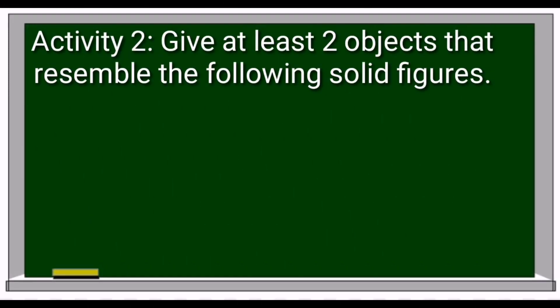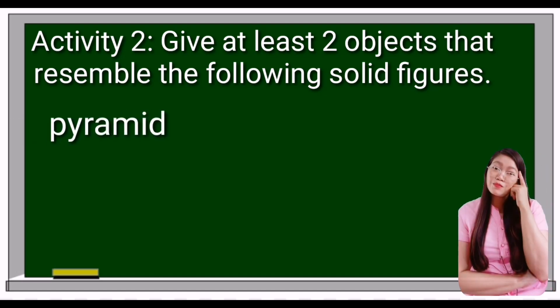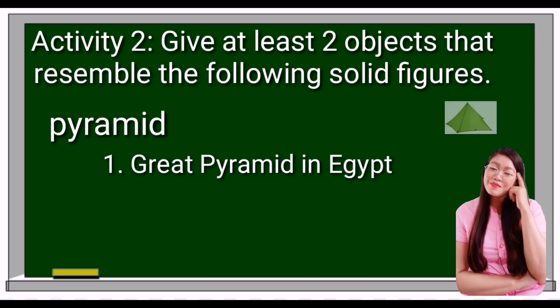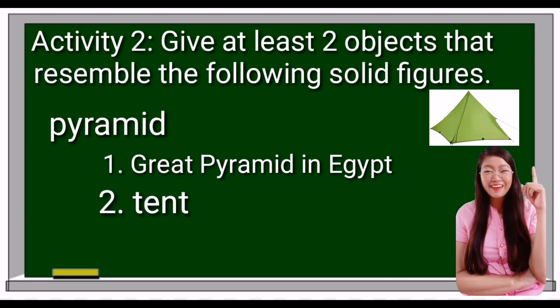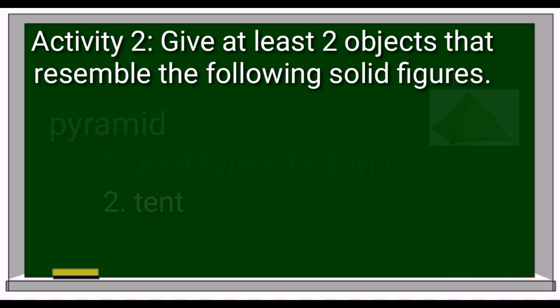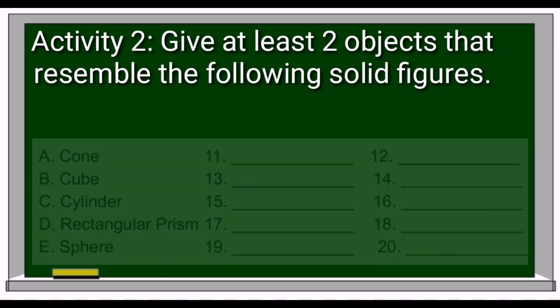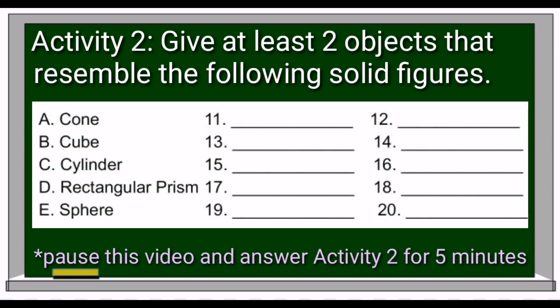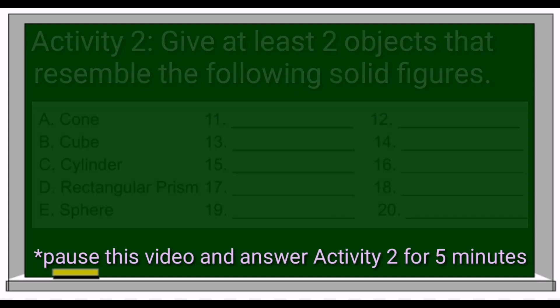Activity 2: Give at least two objects that resemble the following solid figures. For pyramid, I think of the Great Pyramid in Egypt and a tent. It's your turn, kids! Pause this video and answer Activity 2 for 5 minutes. Good luck!